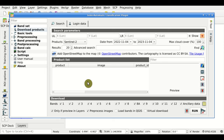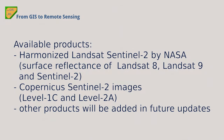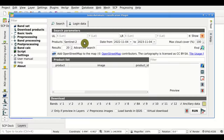The products available in SCP are basically the Harmonized Landsat and Sentinel-2 by NASA, which are the surface reflectance of Landsat 8 and 9 and Sentinel-2 — a very interesting product. We also have the Copernicus Sentinel-2 products with 10-meter bands, and other products will be added with future updates.